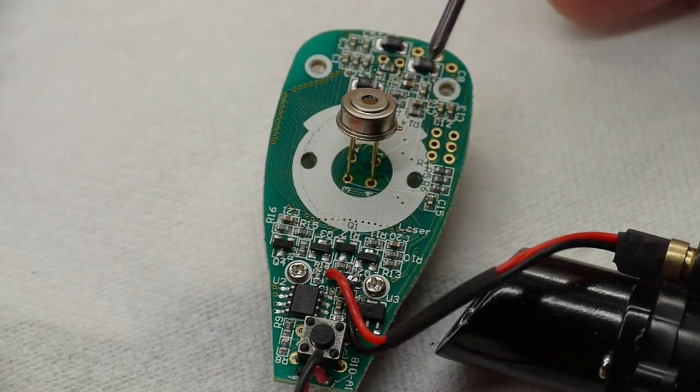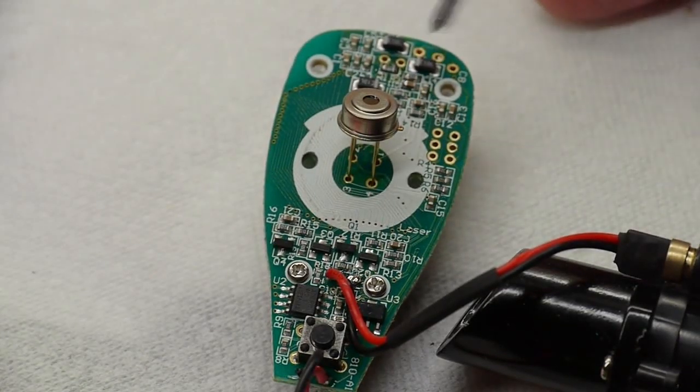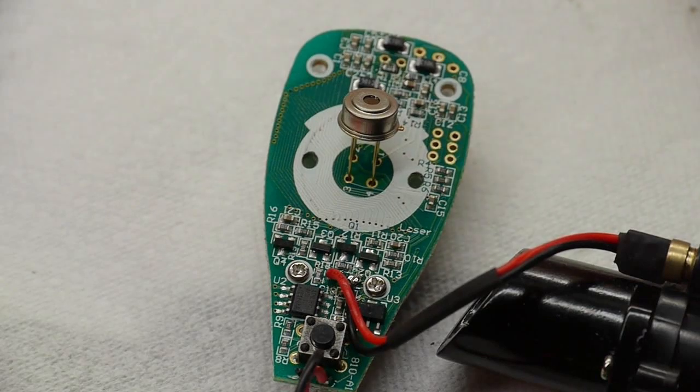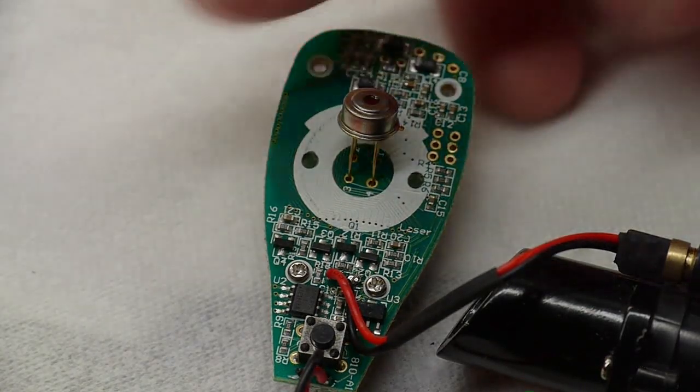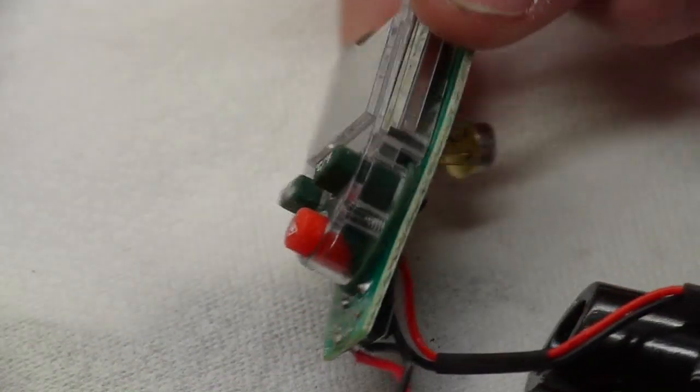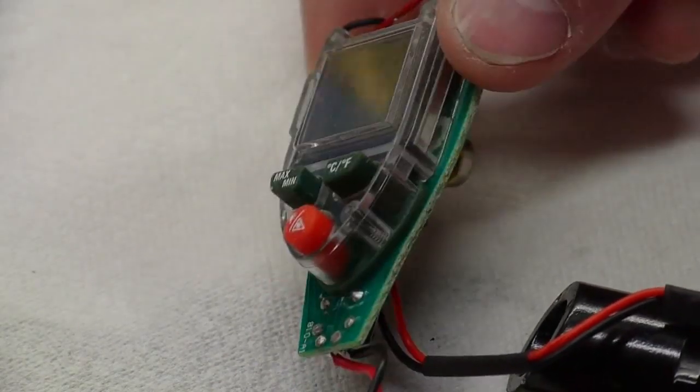So after realizing that this thing only outputs a signal of one millivolt, I started looking around on this board for an op-amp because you need something to amplify that signal. So let me turn it over and I'll unscrew the display here so that we can see what's on the other side of the board.